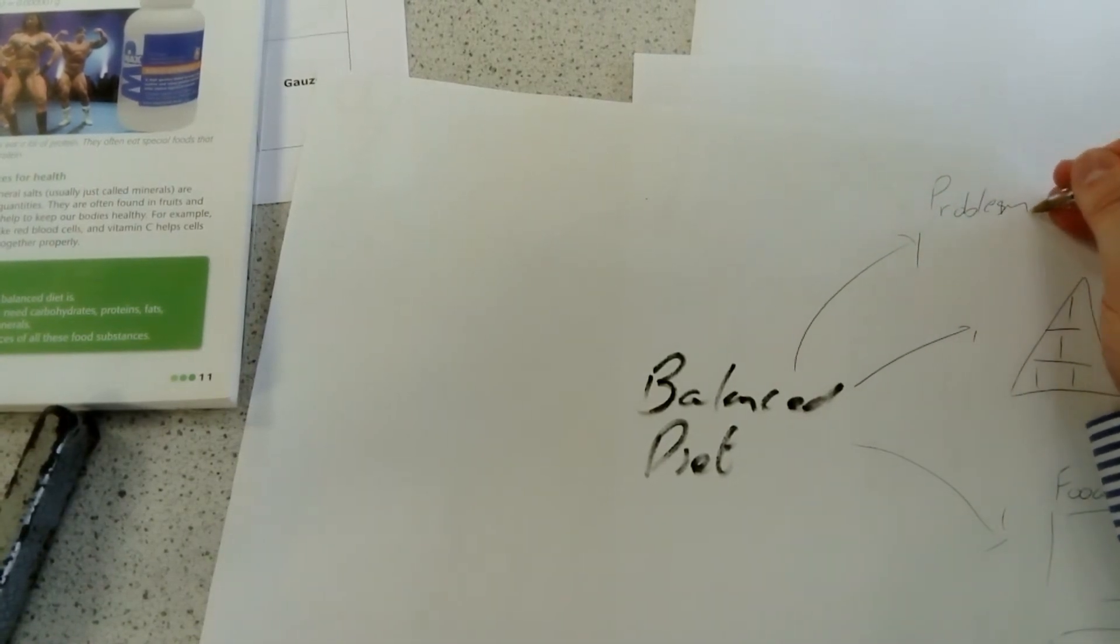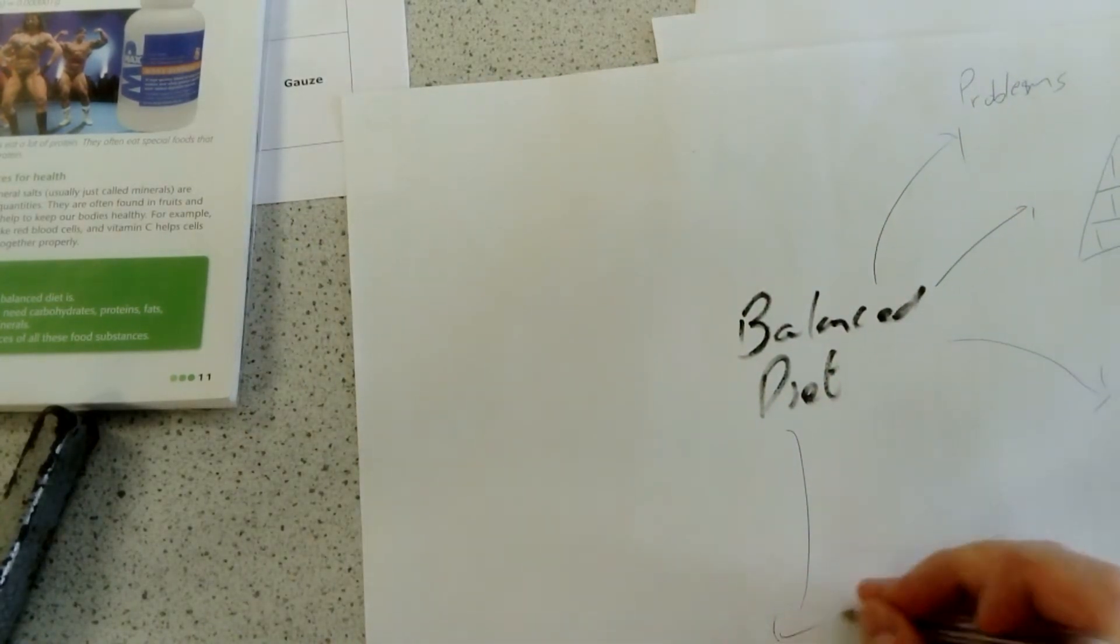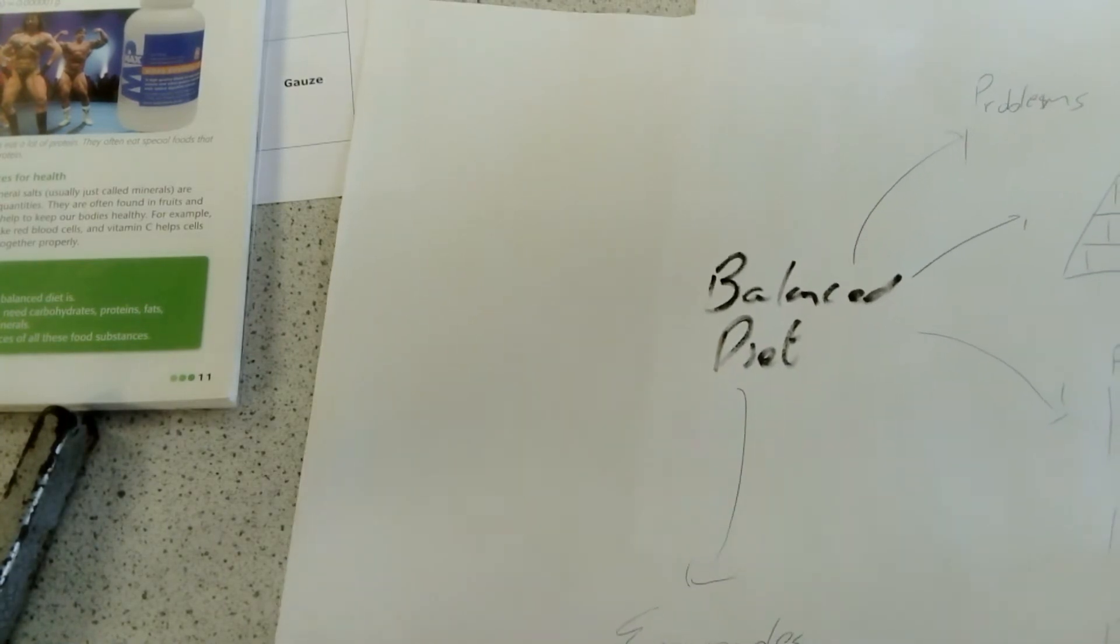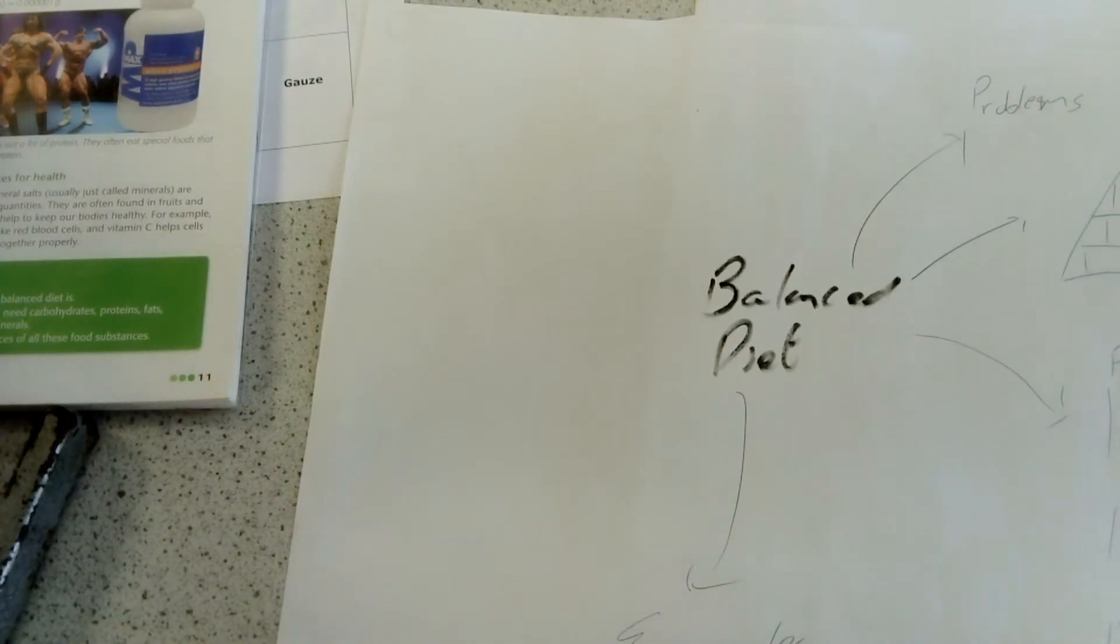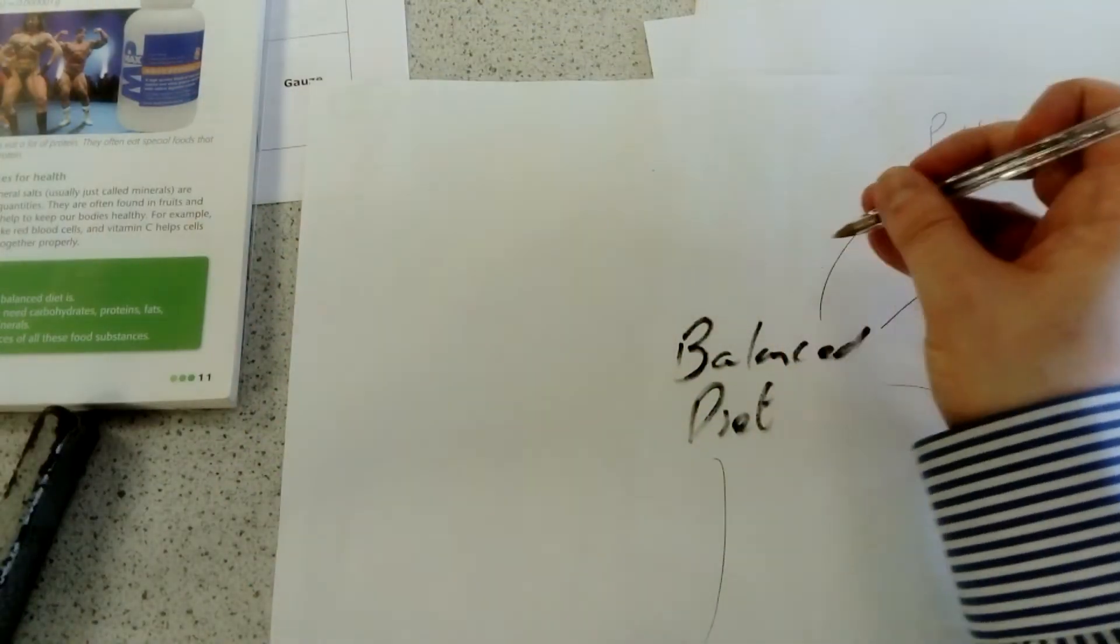...of not having a balanced diet - maybe have a few examples. There's a table there you can use - it's got some information on it, so you might want to include some tables of information.